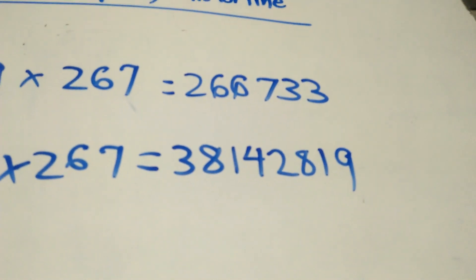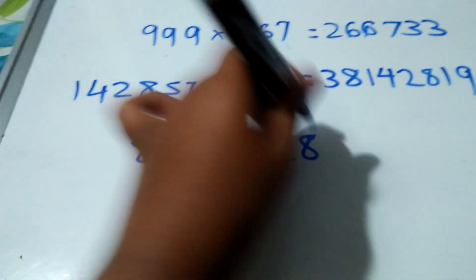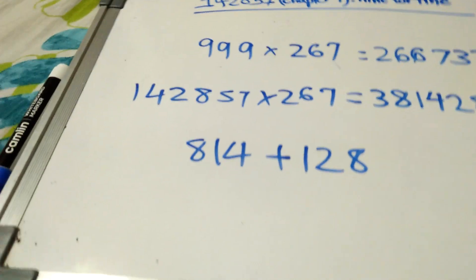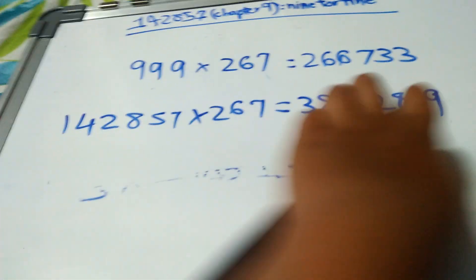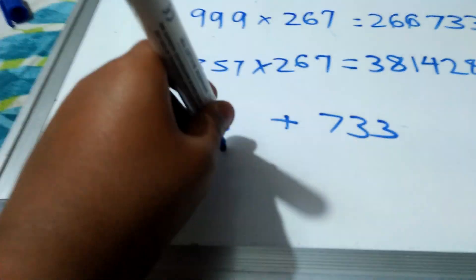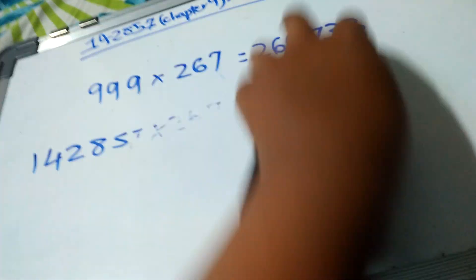A few parts of this can be changed into sub-sequences, and the answer still equals 999. For example: 266 plus 733 equals 999. Also, 38 plus 142 plus 819 equals 999. Two parts of this cyclic number also equal 999,999.